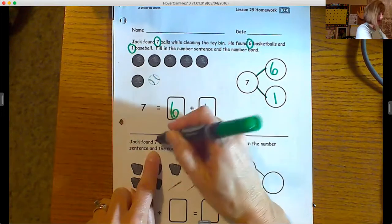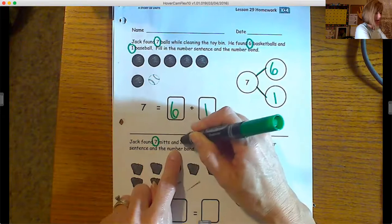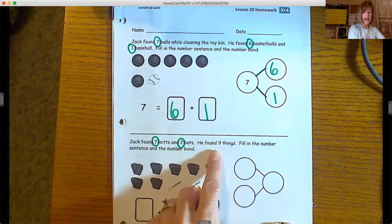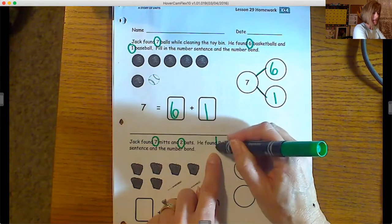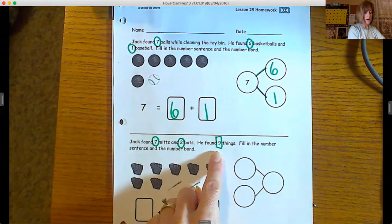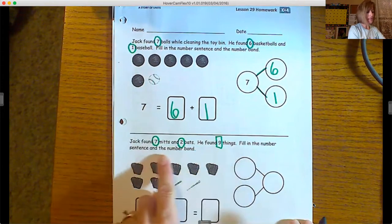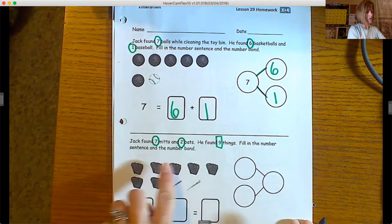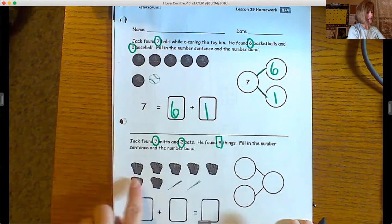I'm going to put a rectangle around that because that's the whole number. Fill in the number sentence and the number bond. So you can count them up here—one, two, three, four, five, six, seven. And then we have two there.